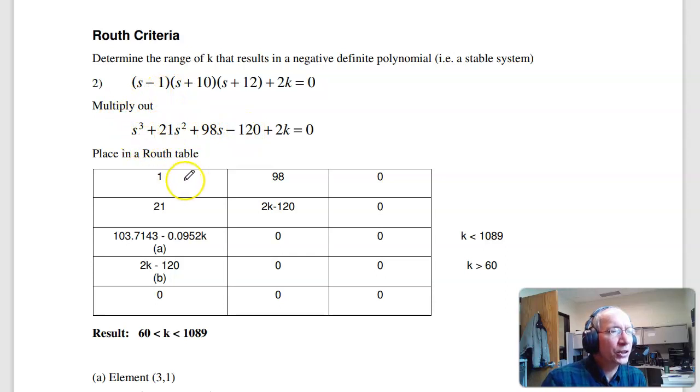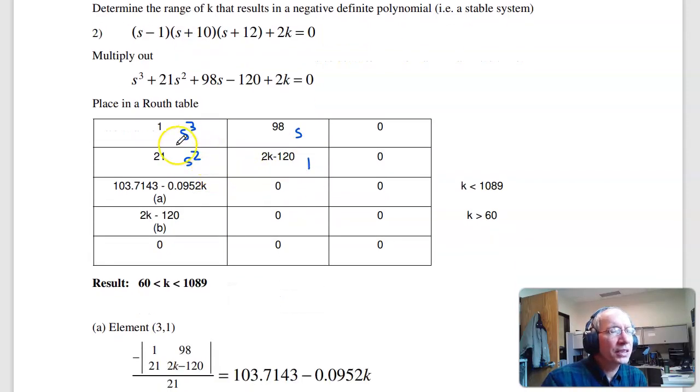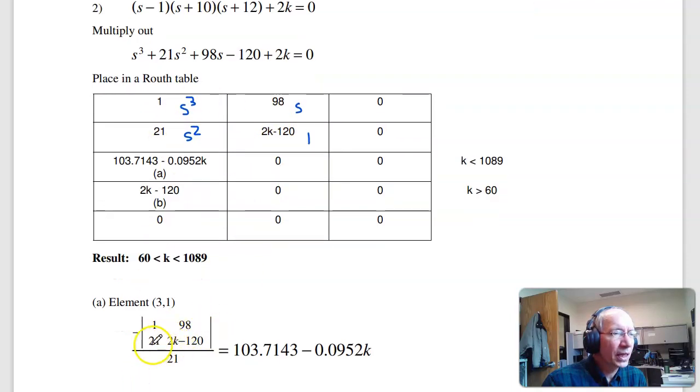So this is 1 s cubed, then every other term - this is the s term and 0. This is the s squared term, s to the 0 term, and 0. Now the next entry is take minus the determinant of 121, 98, 2k minus 120 over 21, and that'll be 21 times 98 minus 2k minus 120 over 21, that value, and 0. When there's 0, 0 to the right, this becomes 0. When this number is a 0, that term is going to drop straight down. 0, 0 to the right gives me 0. So there's my Routh table.